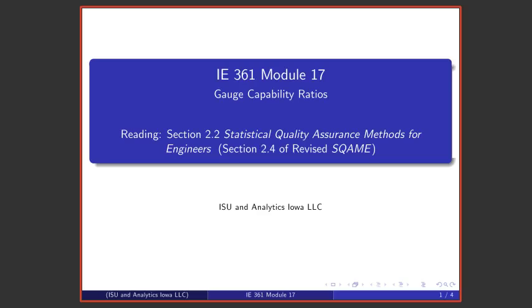Welcome to this short module 17 in this series of lectures on statistical quality assurance and process improvement. We're going to speak briefly about gauge capability ratios.